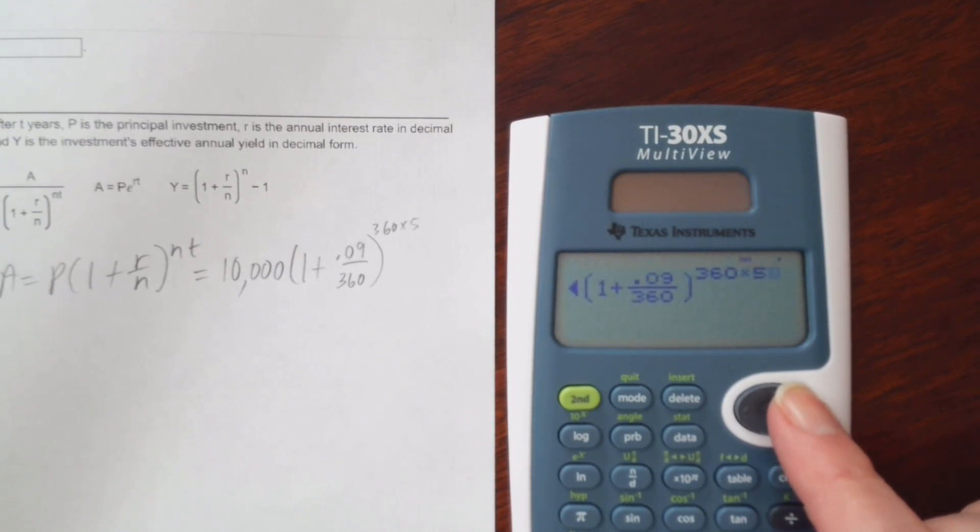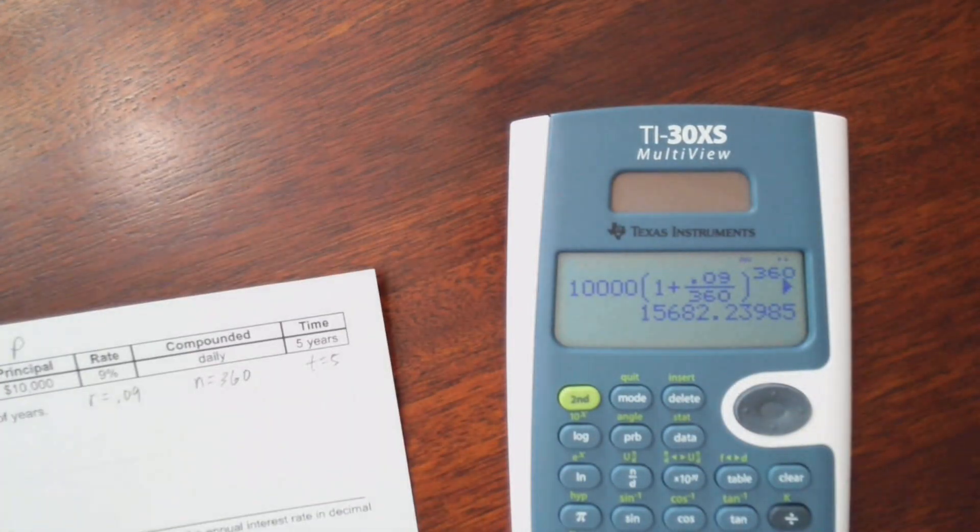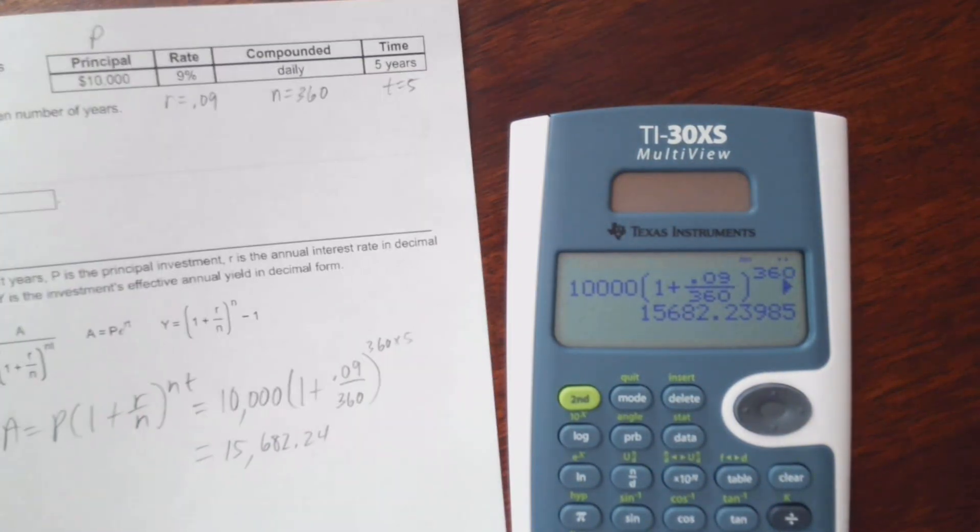So it looks like everything is in there correctly. It's always a good idea to double check the way it looks. Notice the 360 times 5 is in the exponent. So let's go ahead and hit enter. And I'm getting $15,682.24 if you round to the nearest cent.